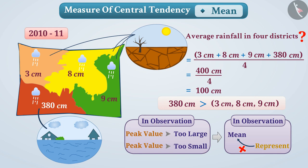In situations when the peak value is too large or small, median and mode help us, which we will read about in subsequent videos.